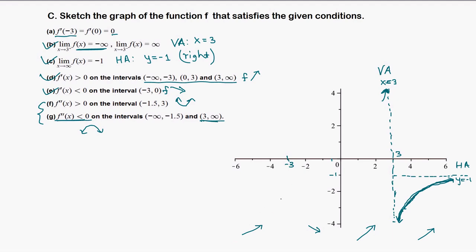Let's sketch: the graph goes up, then down, then up, then down, then up. So at x = 0 the graph is going down then up, which gives a local minimum. At negative 3 the derivative is 0, and with the increasing-then-decreasing pattern we get a local maximum case. At 0 the derivative is 0 and it's a local minimum case.